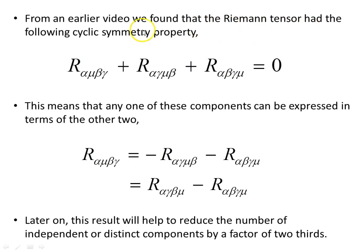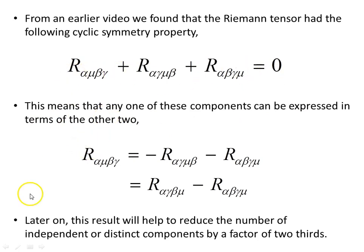From an earlier video we also found that the Riemann tensor has the following cyclic symmetry property. If you hold the first index fixed and cycle through the others — mu beta gamma, gamma mu beta, beta gamma mu — you can do the same holding any index fixed. This means that any one of these components can be expressed in terms of the other two. Any component can be expressed as the sum of the other two when you cycle the indices around. This result will later help to reduce the number of independent components by a factor of two thirds.